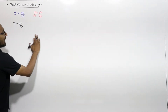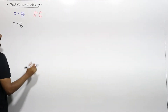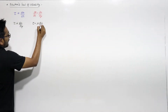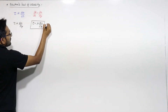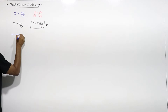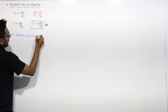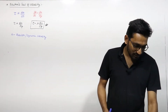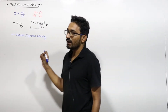So tau is directly proportional to du/dy, and if I remove this proportionality sign I get a constant. That constant is mu, so tau equals mu times du/dy. Mu is known as absolute or dynamic viscosity. This is Newton's law of viscosity: tau is equal to mu into du/dy.